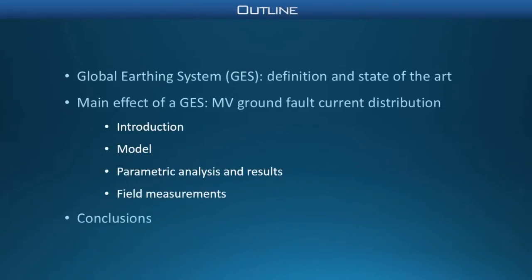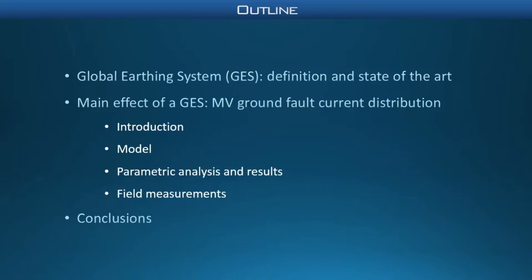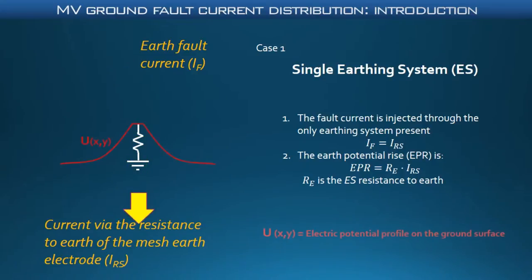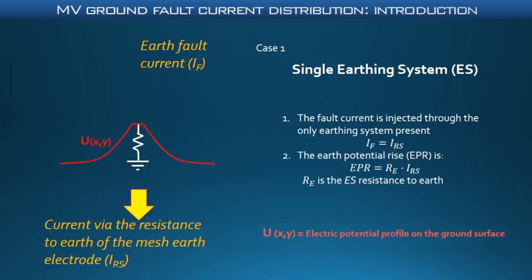As we have seen before, two main effects are linked with the GES definition. But here, for the sake of brevity, I will present only the distribution of the earth fault current among the interconnected earthing systems, which, according to my research, can be considered the most relevant effect and has a greater impact on the electrical safety of a system. Imagine a single earthing system. If a fault occurs, the single line to ground fault current must be entirely injected by the sole earthing system. Here, in red, you can see the earth potential profile on the surface.